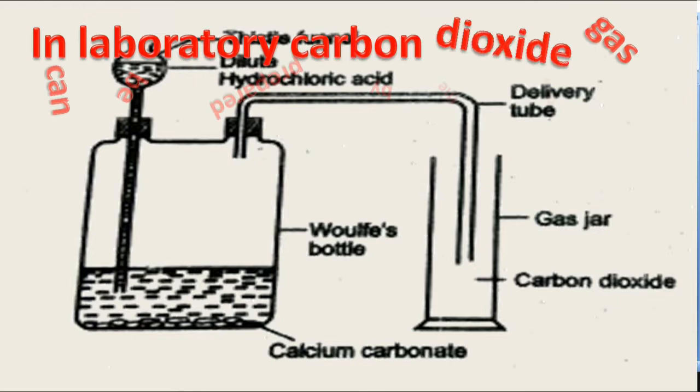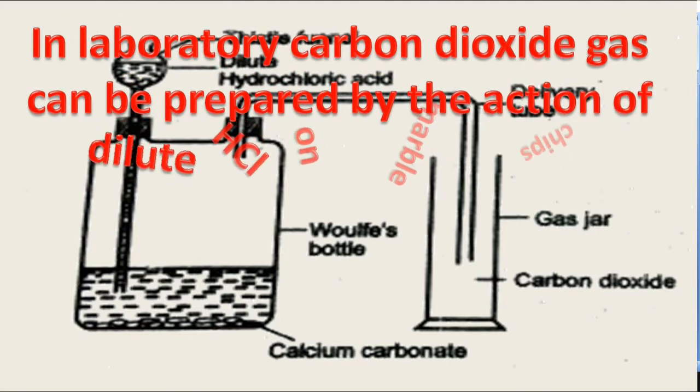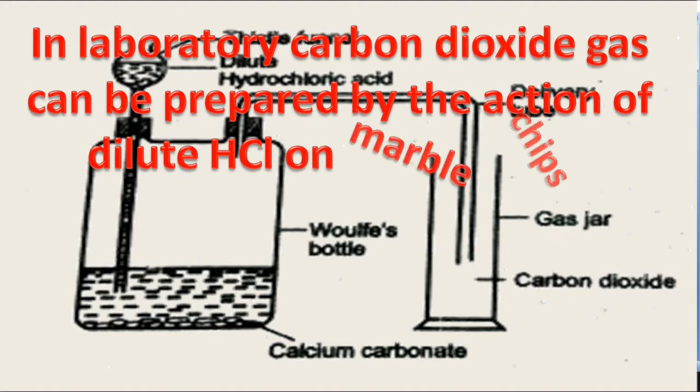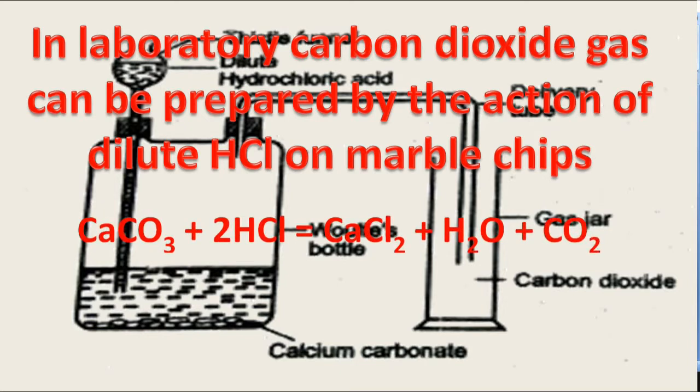In laboratory, carbon dioxide gas can be prepared by the action of diluted hydrochloric acid on marble chips. The chemical reaction can be shown as calcium carbonate plus hydrochloric acid gives calcium chloride, water and carbon dioxide.